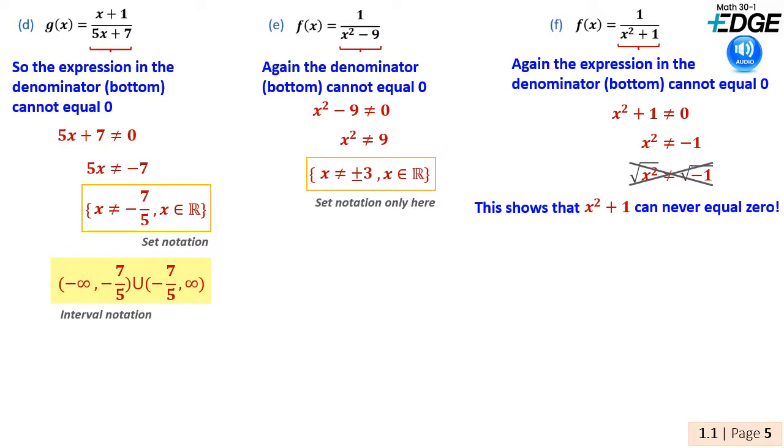In part F, it's worth pausing for a moment. We start by saying that x squared plus 1 cannot equal zero. When we try to solve for x, we find that we are taking the square root of x squared, which is x, and the square root of negative 1, which is not defined in this course.